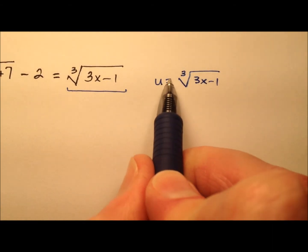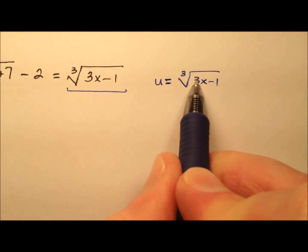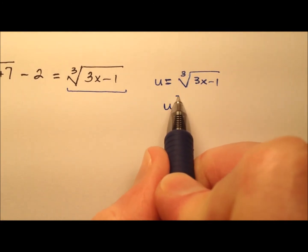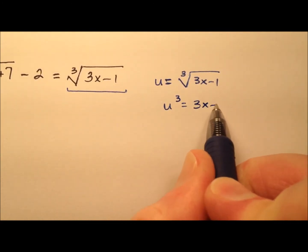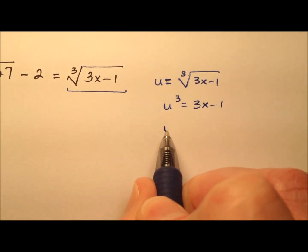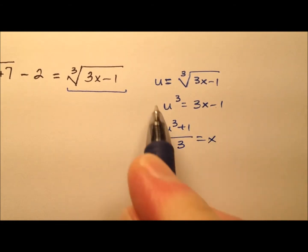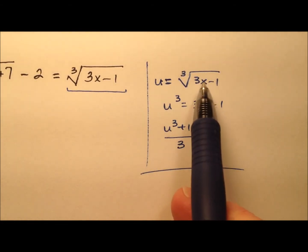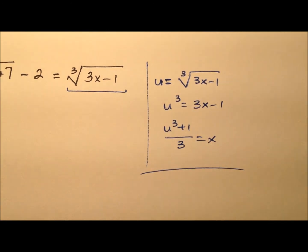Now if we were to solve for x here, we would cube both sides, and then let's add 1 and divide by 3, and that's going to be our value of x right there as well. So here we have u in terms of x and x in terms of u.